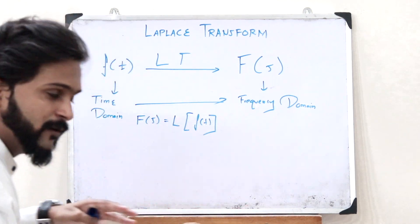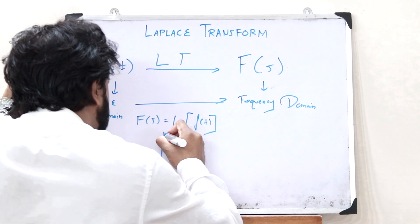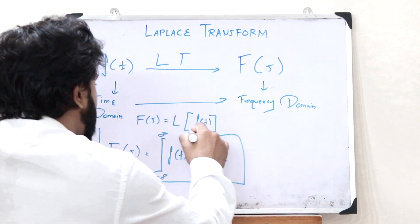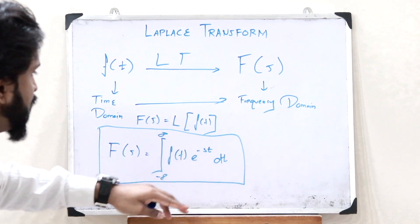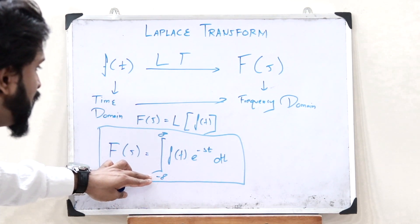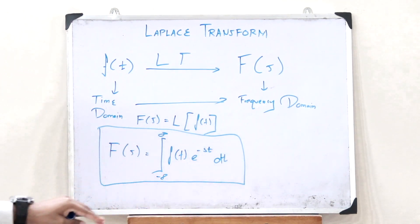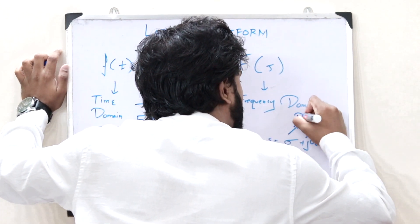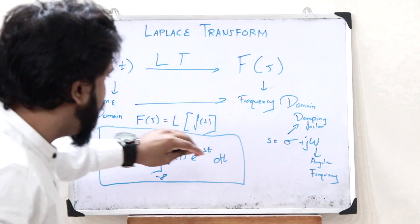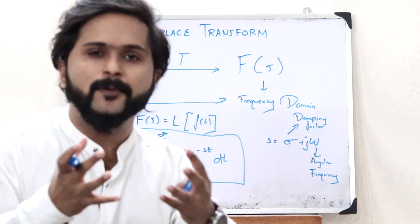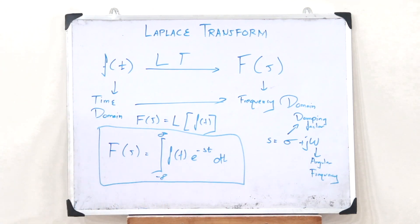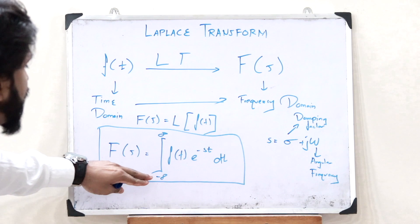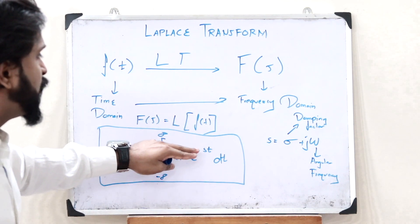F of S is given by the integral from minus infinity to infinity of f of t into e raised to minus S T, d T. This is the expression for finding the Laplace Transform of a particular function f of t. Here S is equal to sigma plus j omega, where sigma is the damping factor of a control system and omega is the angular frequency. This sigma, the damping factor, determines the stability of that particular control system.